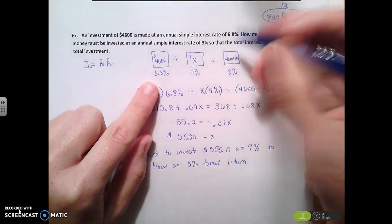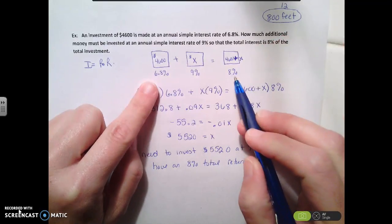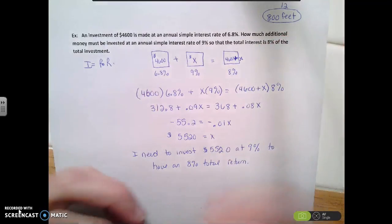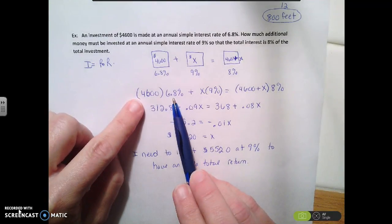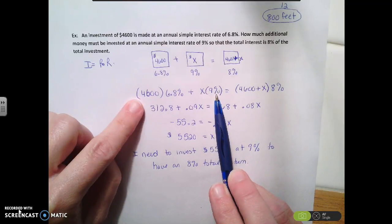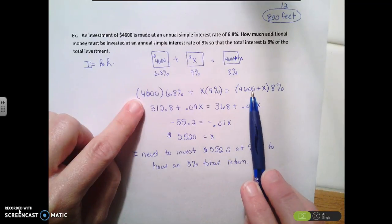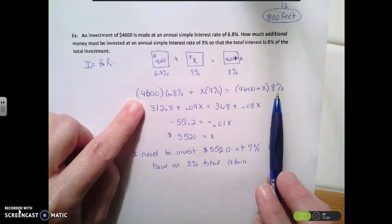And then at the end of the year, I'm going to have 46 plus X. I'm sorry, it's not very clear. 46 plus X. And that's going to end up being 8%. And all of this is going to end up being the same amount. So $4,600 times 6.8% plus some other value times 9% is equal to all of my money, which is 4,600 plus X times 8%.